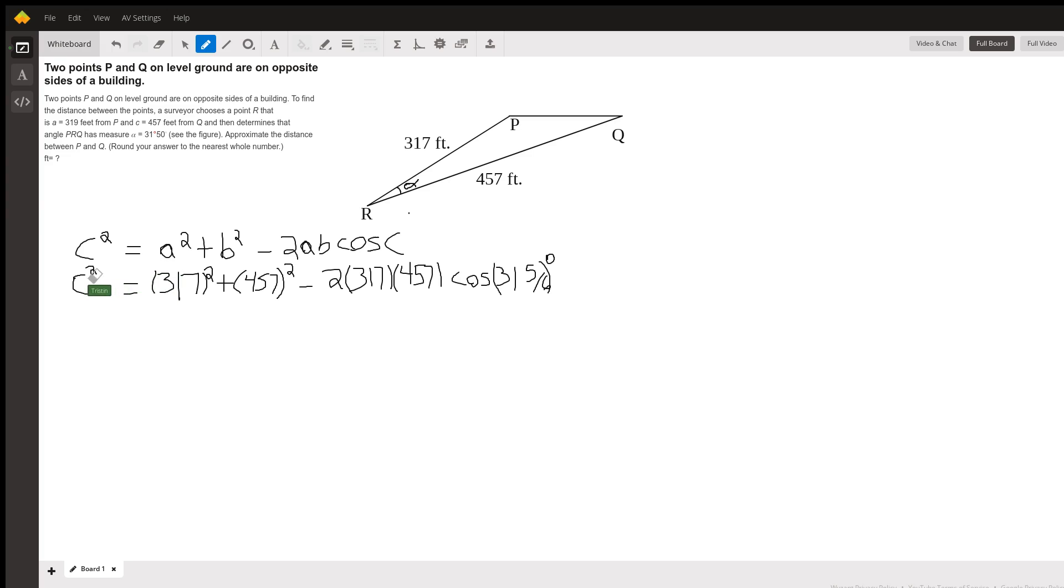So we have that c squared is 317 squared plus 457 squared minus 2 times 317 times 457 times cosine of 31 degrees and 50 minutes.